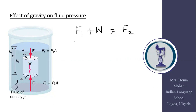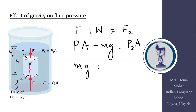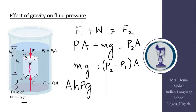For equilibrium, the net downward force equals the upward force. So F1 plus weight W equals F2, which gives P1·A plus mg equals P2·A. Therefore, mg equals (P2 − P1)·A. Since mass m equals ρ·A·h (density times area times height), substituting gives ρ·A·h·g equals (P2 − P1)·A. Cancelling A from both sides, we get P2 − P1 equals hρg.